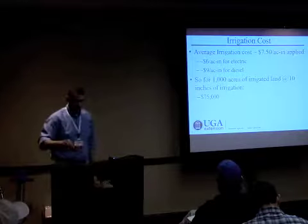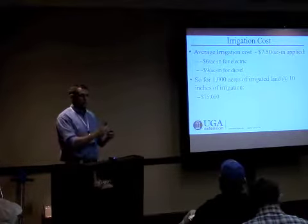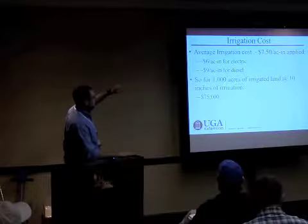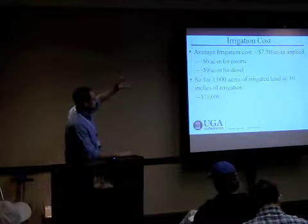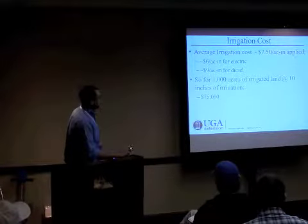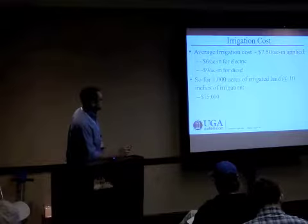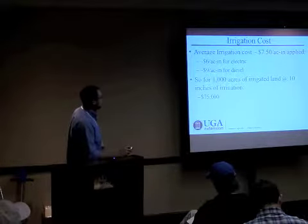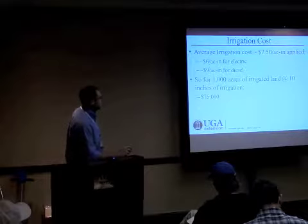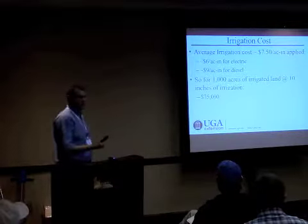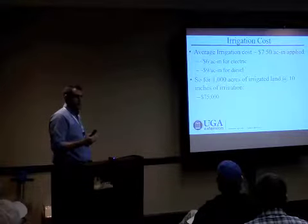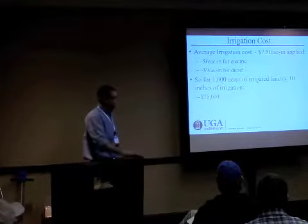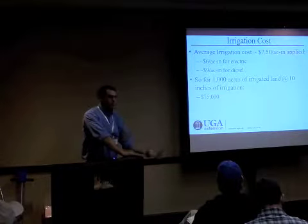Irrigation costs — this comes from Georgia, so I'm not sure how close it is for y'all, but I'd assume it's probably pretty close. Right now we're sitting at about $7 per acre-inch for electric in Georgia and about $10.80 for diesel. That averages out to about $9, which comes out to about $90,000 for 10 inches of irrigation applied. It's not free to pump the water — we're paying energy costs no matter where we're moving that water from.